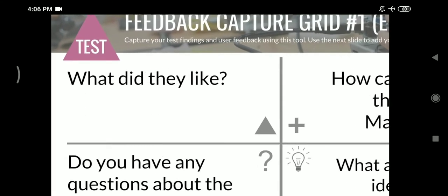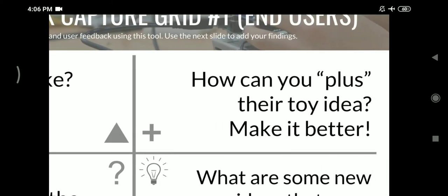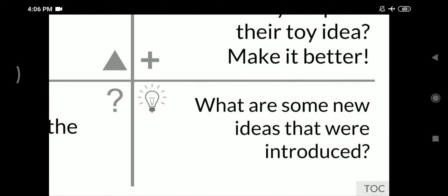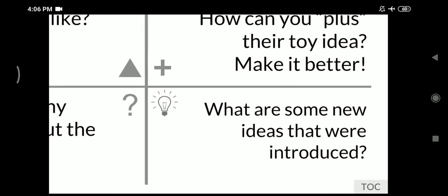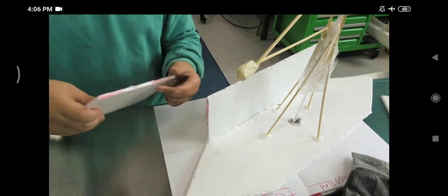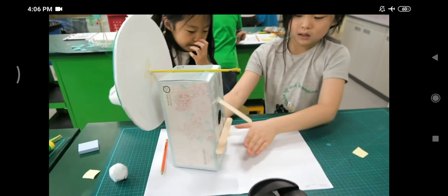The feedback capture grid contains four quadrants. In the first quadrant, the second graders wrote down their users' feedback on what they liked about their toy prototypes. The second quadrant contained the users' constructive feedback, while the third quadrant contained the questions that arose during the testing. The fourth quadrant contained new ideas or improvements that emerged from the tests and the information they were looking to record.